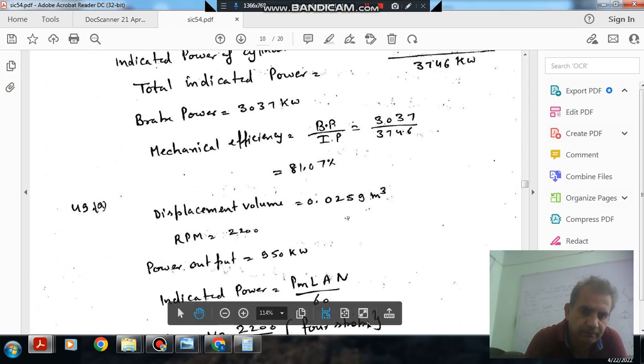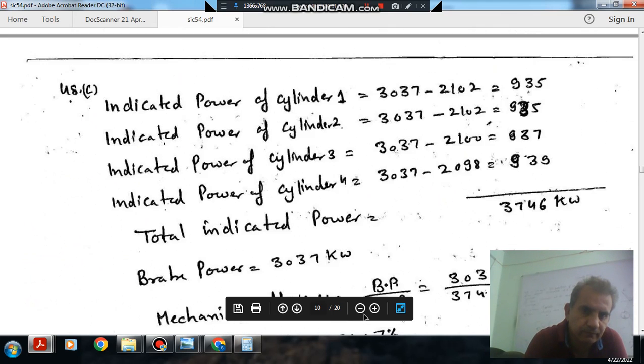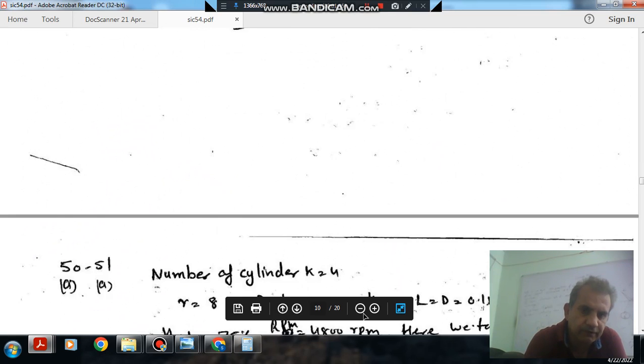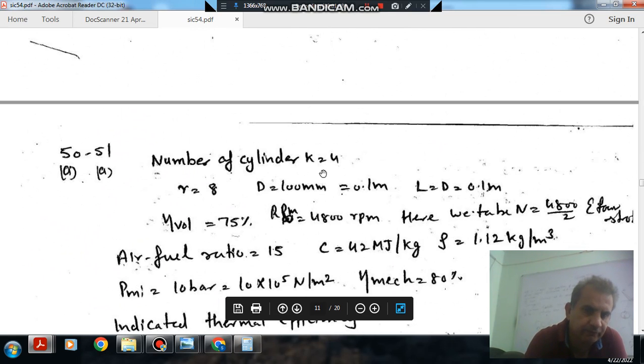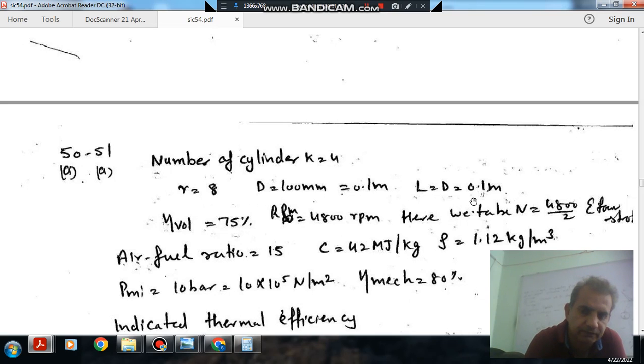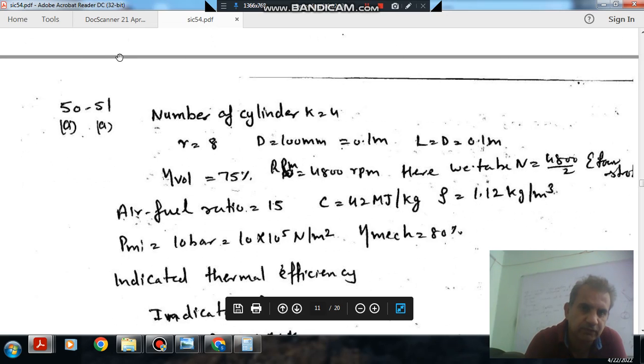Here it is given that the number of cylinders are 4, compression ratio is 8, diameter is 0.1 meter, and L is equal to B is equal to 0.1 meter. Volumetric efficiency is 75%. As the engine is 4-stroke, the working number of cycles are 4800 by 2. Air-fuel ratio is 15 and density is 1.12.